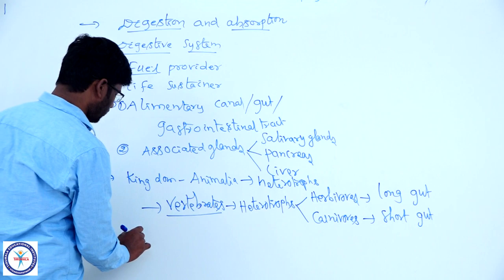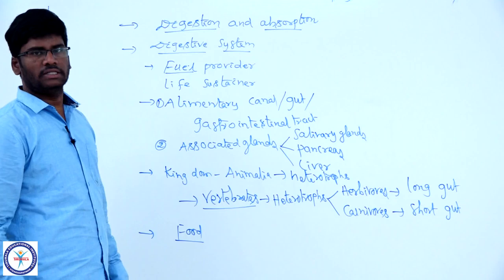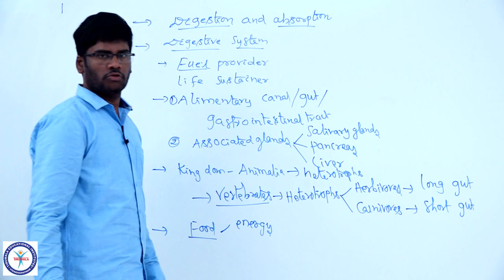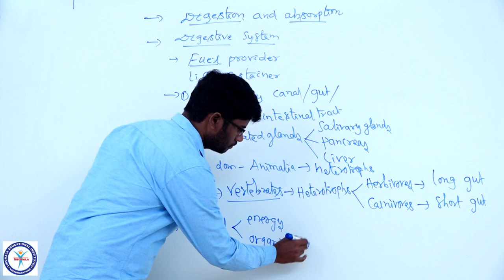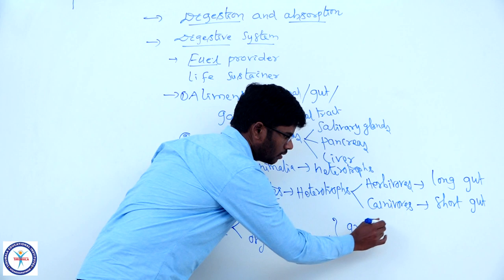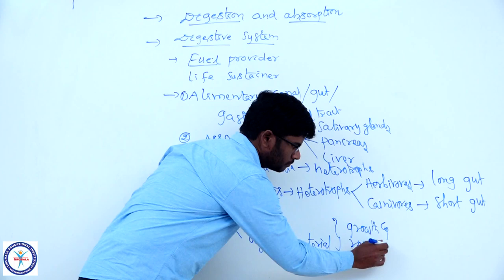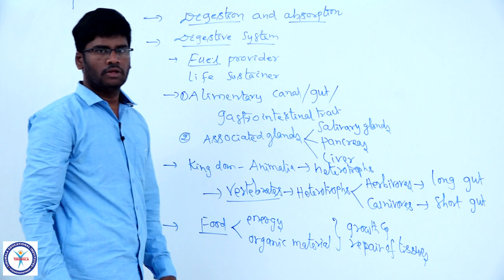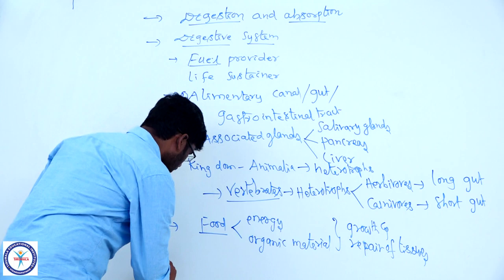The basic requirement of all living organisms is food. Food is the basic requirement because food is the source of energy and organic material. Energy and organic material both help in growth and repair of tissues. Without energy there is no growth.